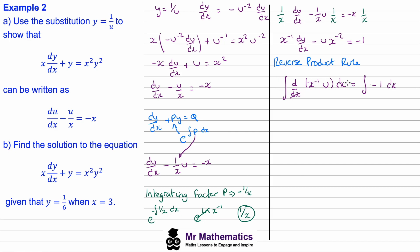Integrating both sides with respect to x, the dx cancels with the derivative on the left, giving x to the negative 1 times u. The integral of negative 1 on the right gives negative x plus c. Moving x to the negative 1 to the right gives u equals x(c minus x).